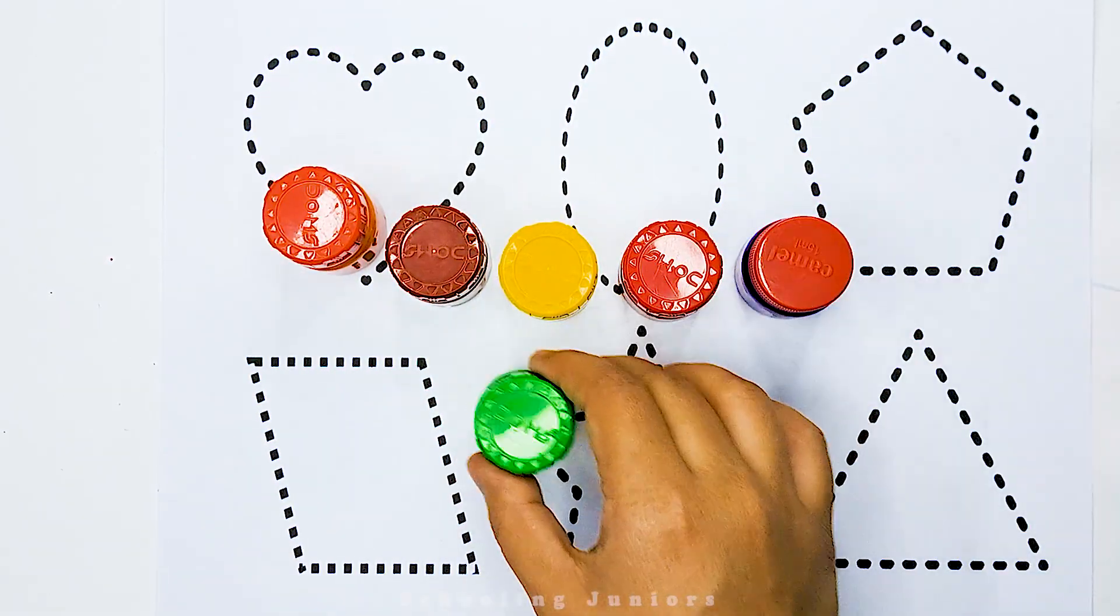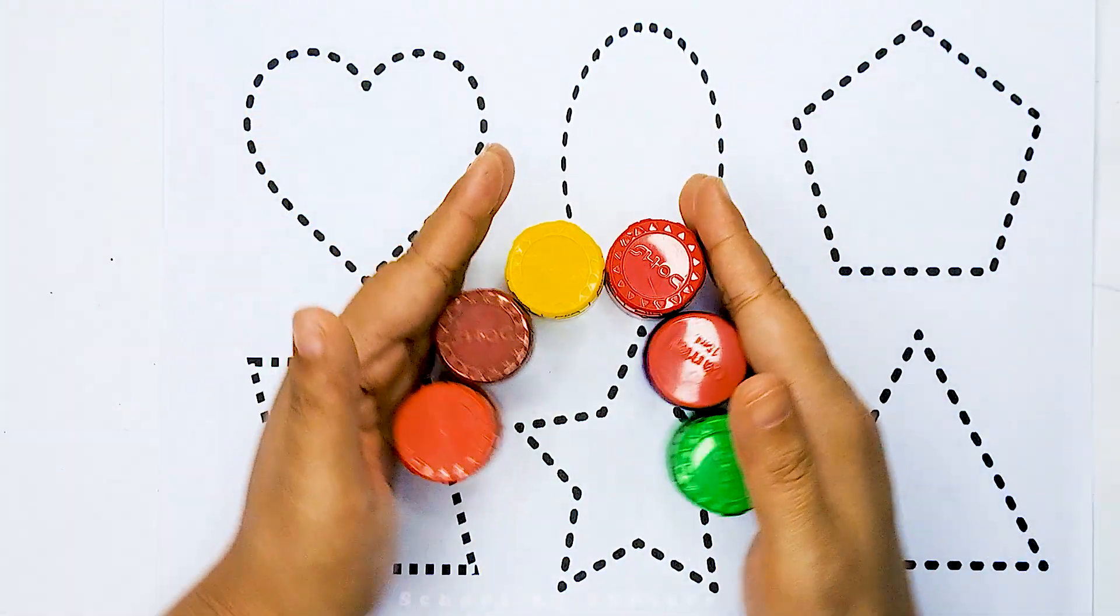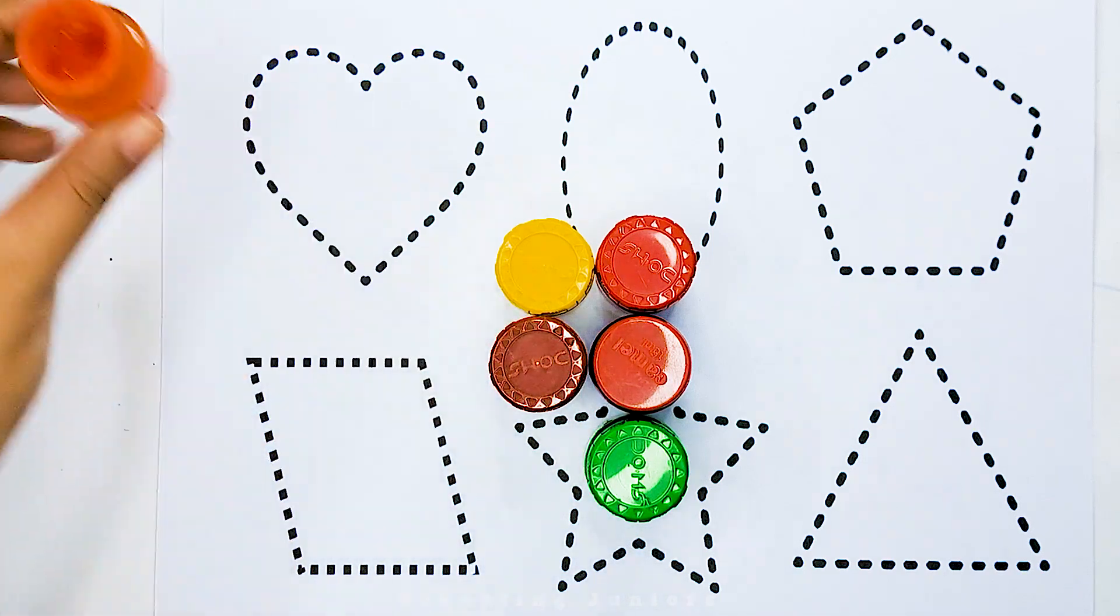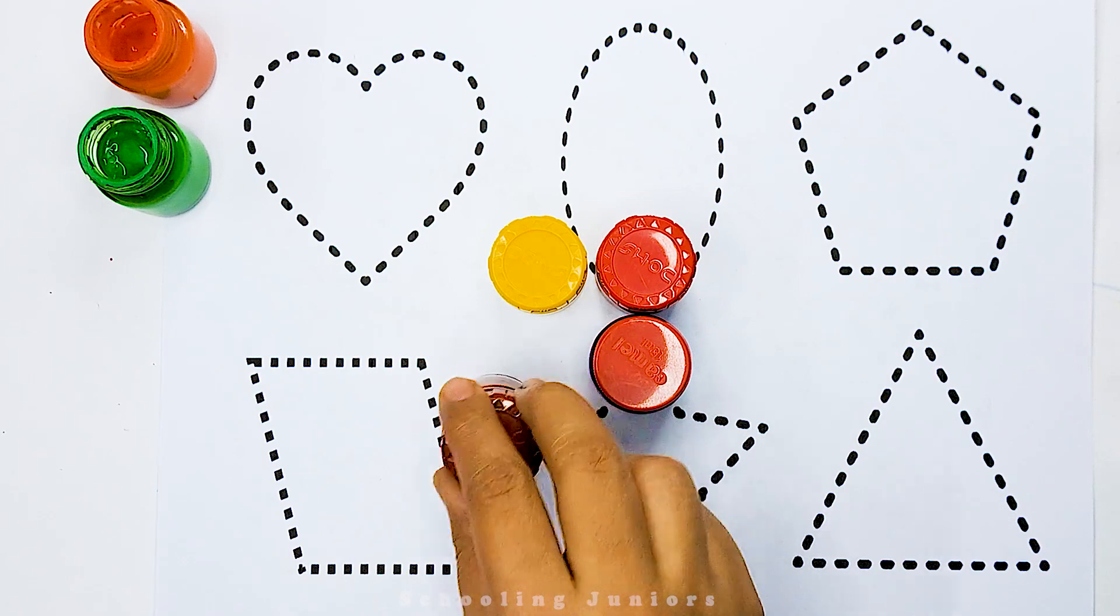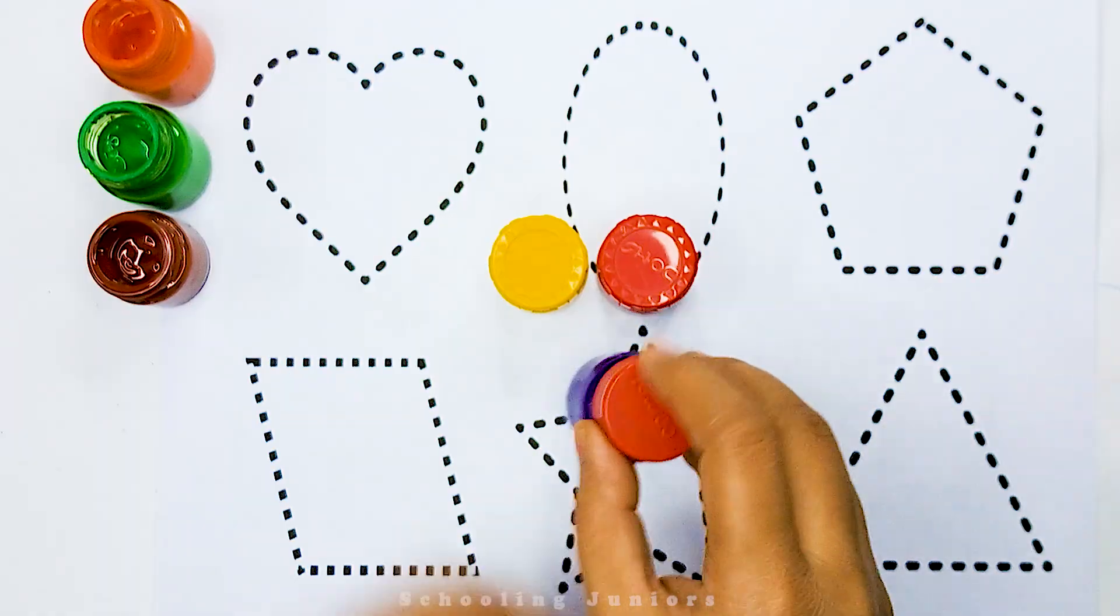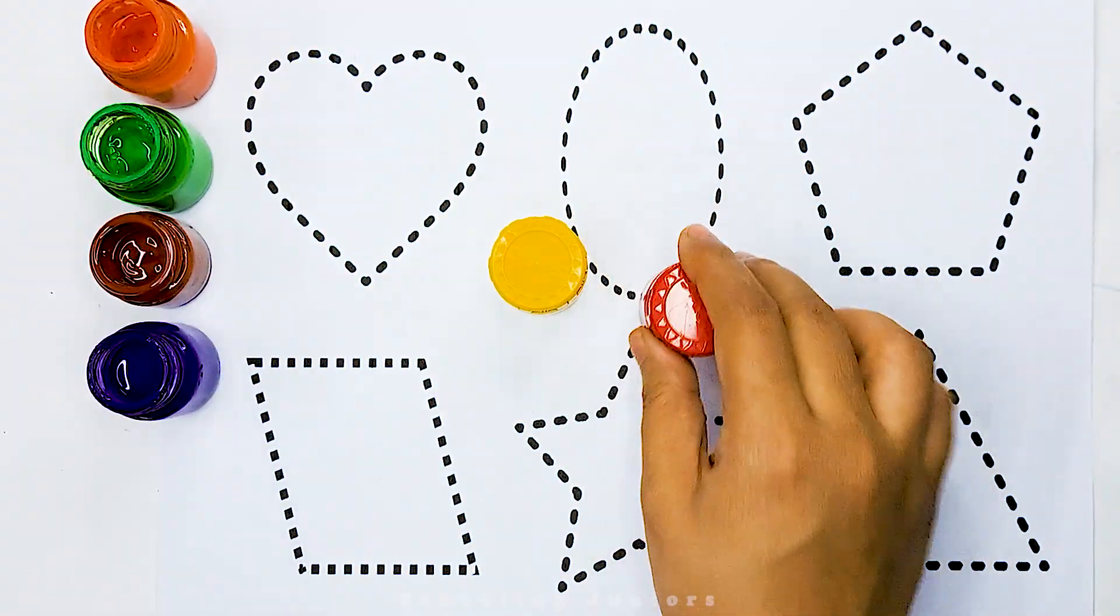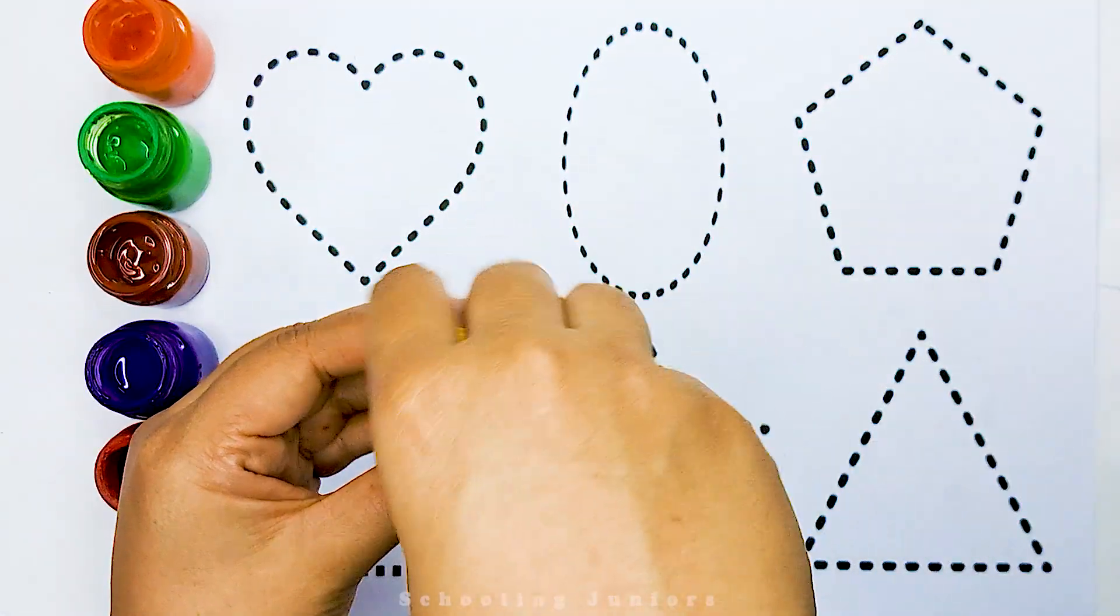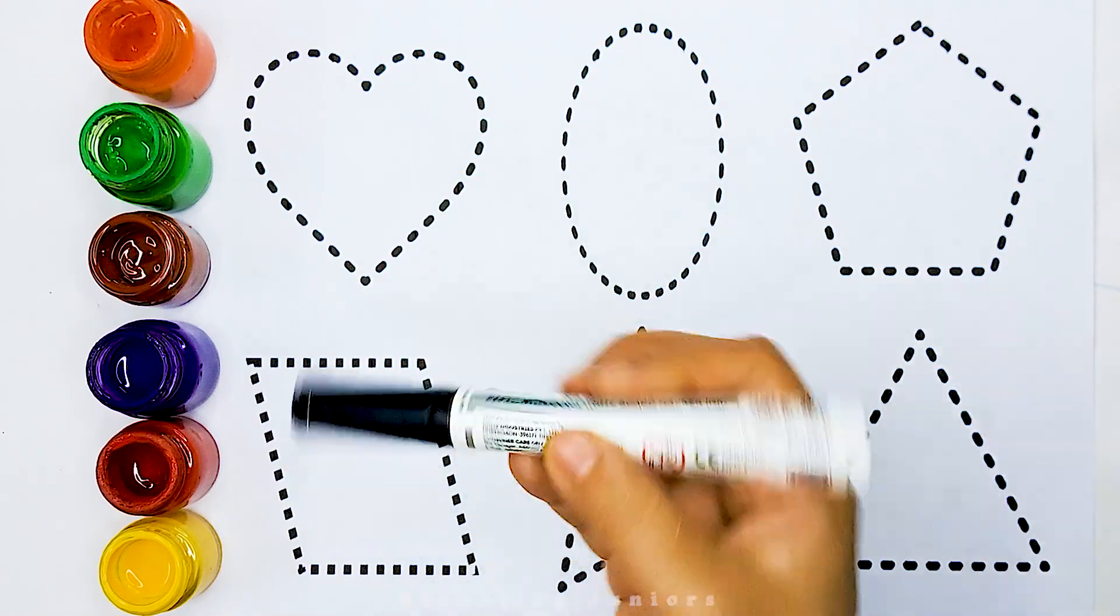Let's learn some color names. So, let's get started. Red, orange color, green color, brown color, purple color, red color, yellow color, black paint.